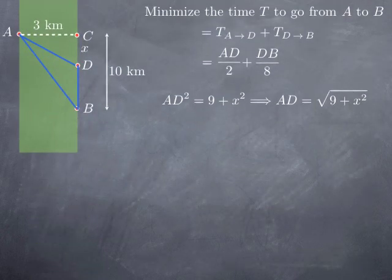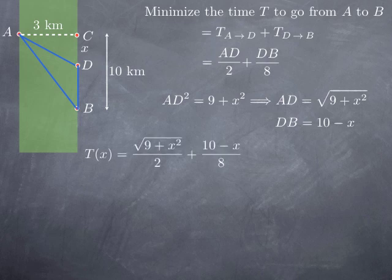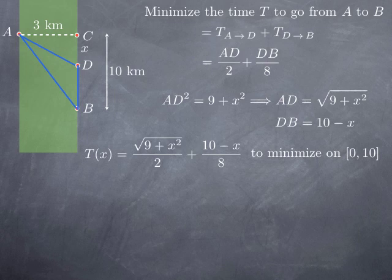As for the distance DB, since CB is 10 km and CD is X, DB equals 10 minus X. Substituting AD and DB with these expressions in terms of X, we find the time required to go from A to B as a function of X: T(x) = sqrt(9 + x²) / 2 + (10 - x) / 8. We want to minimize this function on the closed interval [0, 10].